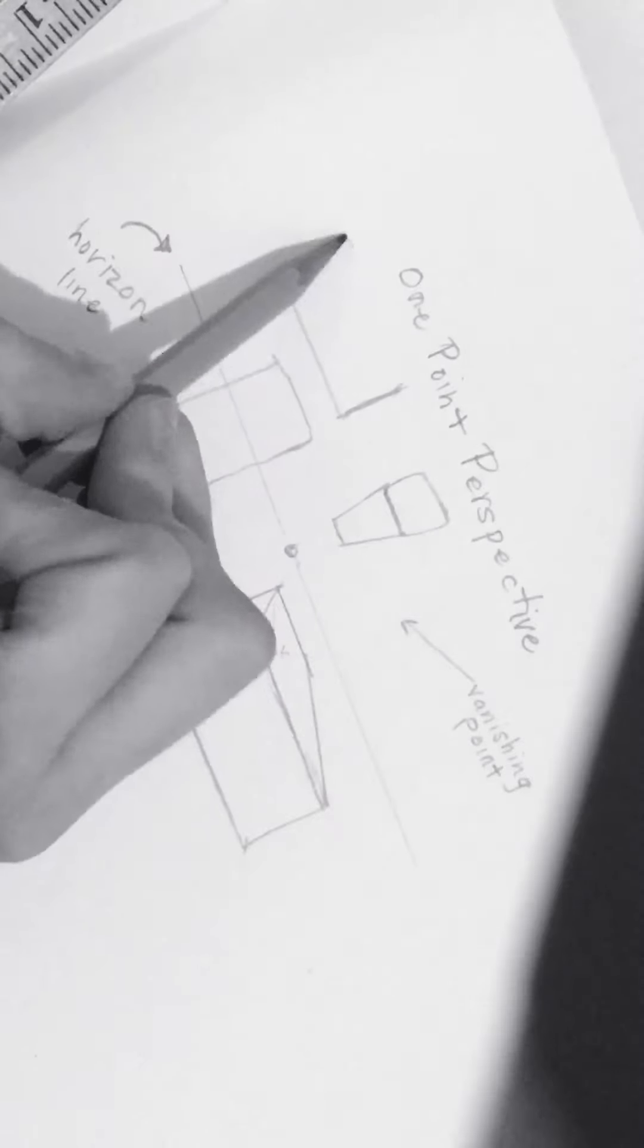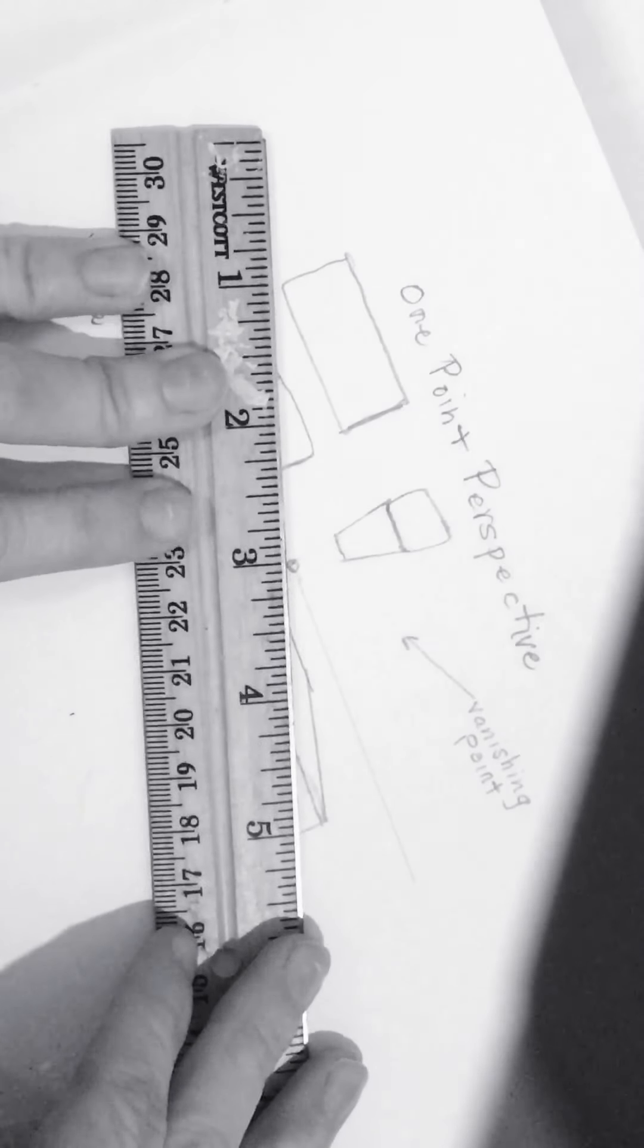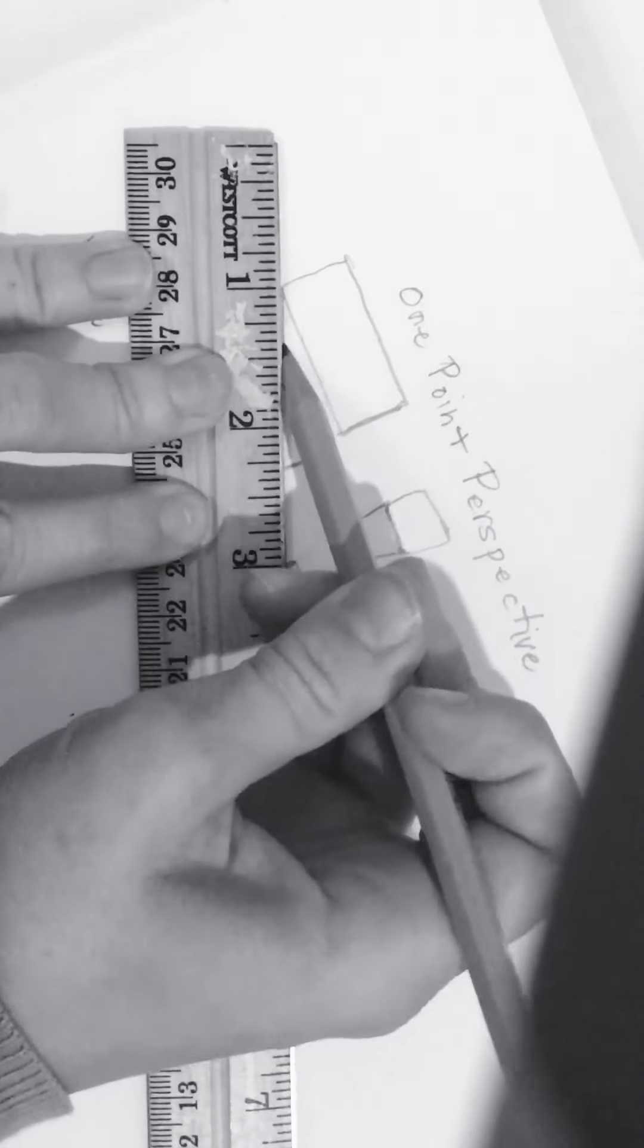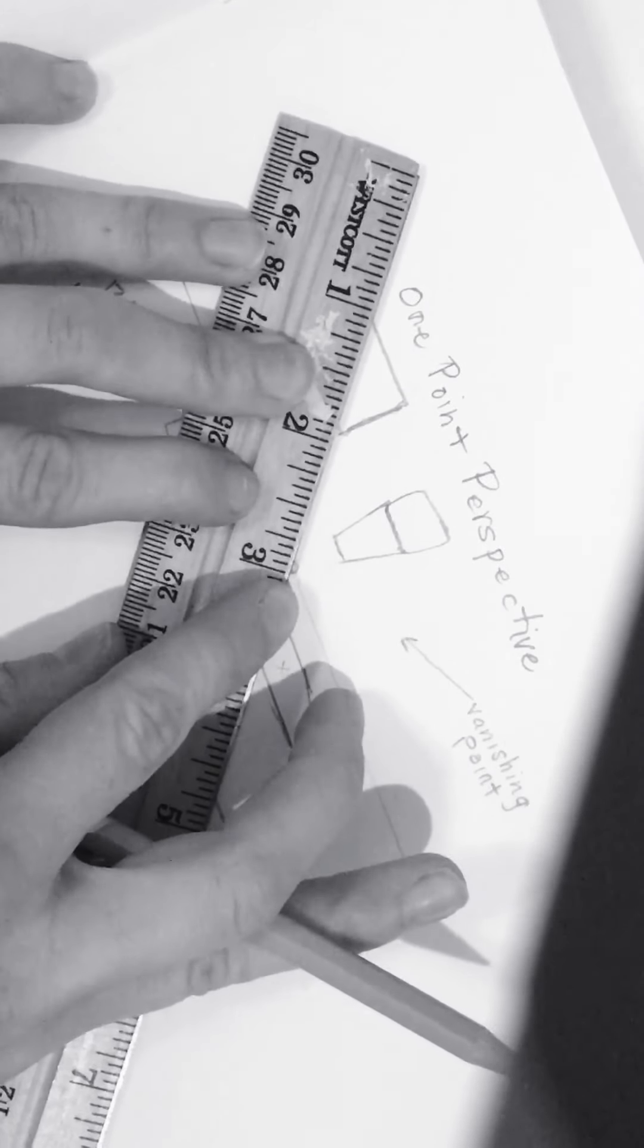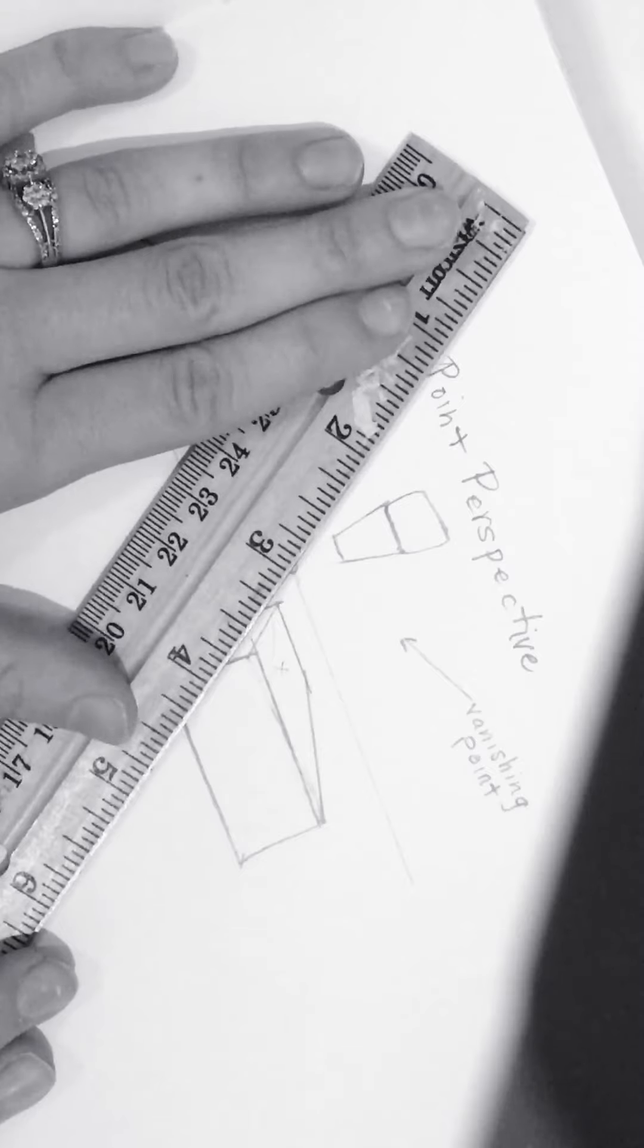Now I will not actually see any sides of this box because it is directly over my vanishing point. But if I wanted to do a box over here, just for added practice and to see the difference, I would line my ruler up to the corner of the box and draw a line. And again. And again.